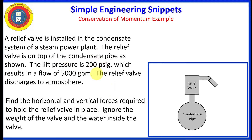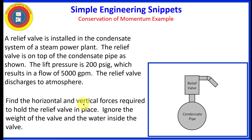Here's the situation. We have a relief valve located on top of the condensate pipe. Its lift pressure is 200 pounds per square inch gauge, and that results in a flow of 5,000 gallons per minute. The relief valve is relieving to atmosphere. Our goal is to determine the horizontal and vertical forces required to hold the relief valve in place, and we are going to be ignoring the weight of the valve and the water inside of the valve.